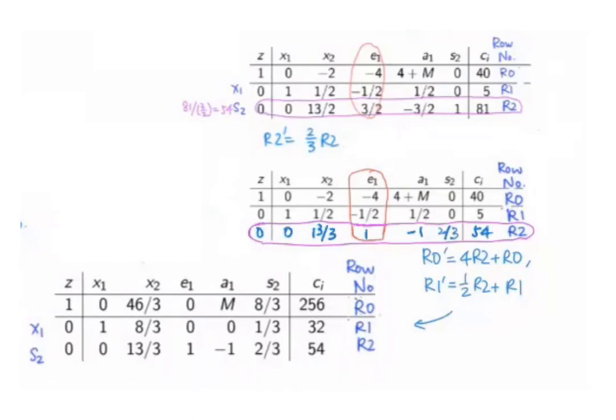Now from this system, we shall take the solutions to be x1 equals 32, x2 equals 0, e1 equals 54, a1 equals 0, s2 equals 0, and z equals 256.